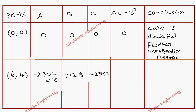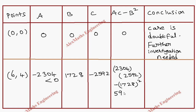Now we compute ac - b²: a · c = (-2304) · (-2592) = positive = 5971968. Then b² = 1728² = 2985984. So ac - b² = 5971968 - 2985984 = 2985984, which is greater than 0. Since ac - b² > 0 and a < 0, this point is a maximum.